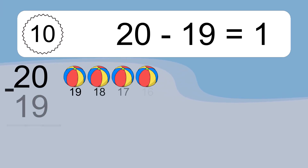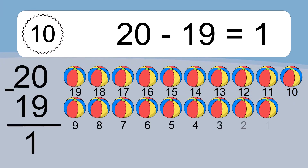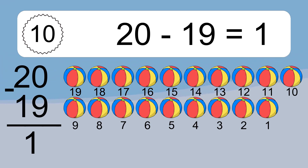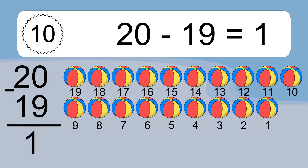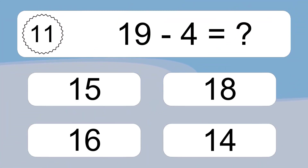20 minus 19 equals what? 20 minus 19 equals 1. Let's count it: 19, 18, 17, 16, 15, 14, 13, 12, 11, 10, 9, 8, 7, 6, 5, 4, 3, 2, 1.